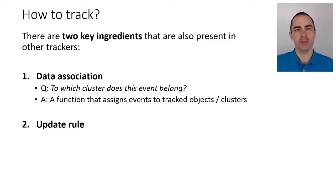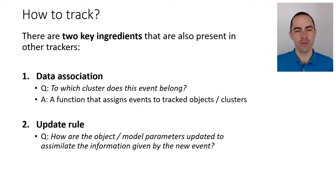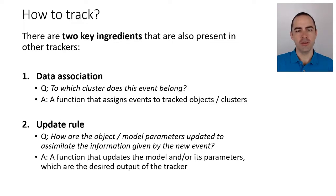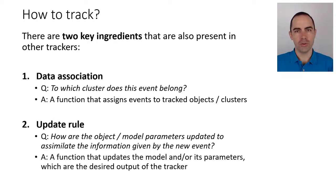The second key ingredient is the update rule. We have an event, we have assigned it to a cluster, we know the association. Now we have to say: how are the model parameters of the object updated to assimilate information given by this new event? We need a function that updates the model or its parameters — which are typically the desired output of the tracker. Basically, we have a new event assigned to a tracker, and now we determine what new information the event brings to update the model parameters.